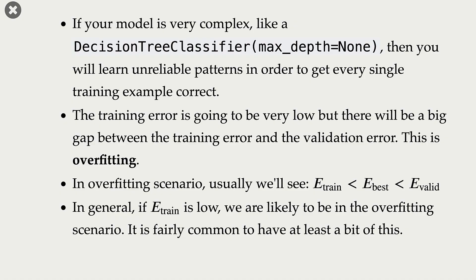We are relying too much on the training data, capturing patterns that are not real — just random quirks in the data. Because we are only given a small sample of the full data distribution, we capture patterns from this sample that are not actually real patterns from the full distribution. In overfitting, E-train is even less than E-best, which is less than E-valid. In general, there is always some gap between E-train and E-valid — E-train is always smaller — so there is always some amount of overfitting, and you have to watch when this gap becomes unacceptable.